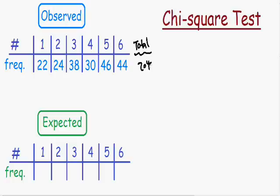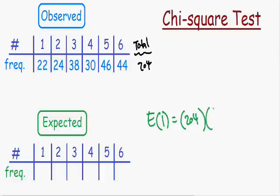Out of 204 observations, what would the expected values be? Let's start with the number 1 — how many times would you expect the number 1 to be rolled? If you're rolling the dice 204 times and you have a 1 in 6 chance of rolling a 1, then 204 times 1/6 equals 34. You would expect to roll the number 1 thirty-four times, so our expected value for the number 1 is 34.